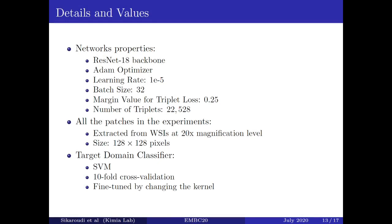The network properties of our experiments are as follows. We have used ResNet-18 backbone as our triplet network. The margin value for triplet loss was set to 0.25. The number of triplets in every training scenario was set to 22,528. Patches are 128 by 128 pixels extracted from whole slide imaging images at 20x magnification level. SVM classifier with 10-fold cross-validation fine-tuned by changing the kernel has been used for our target domain classifier.